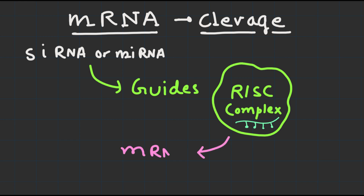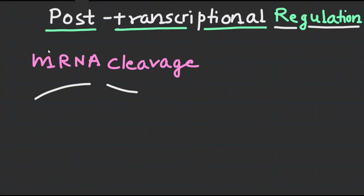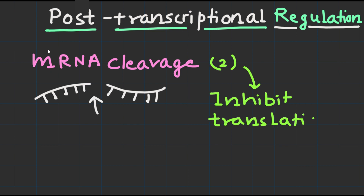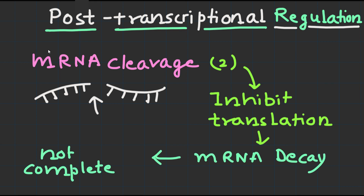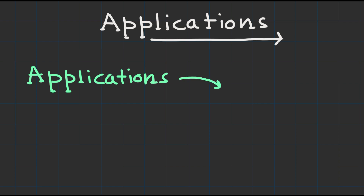Once bound, the RISC complex triggers the cleavage and degradation of the target mRNA molecule, preventing it from being translated into a protein. In addition to mRNA cleavage, miRNA can also regulate gene expression by inhibiting translation or promoting mRNA decay without complete cleavage.